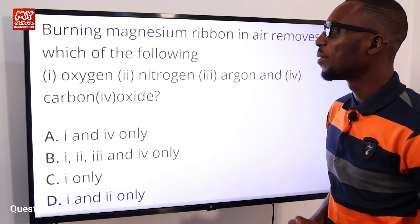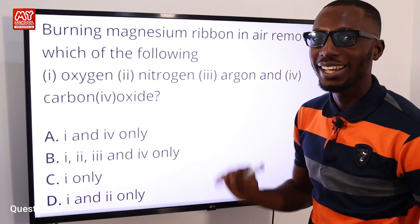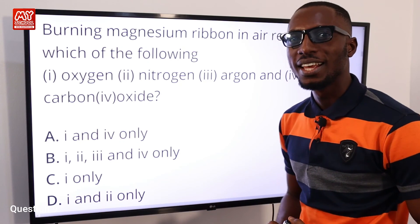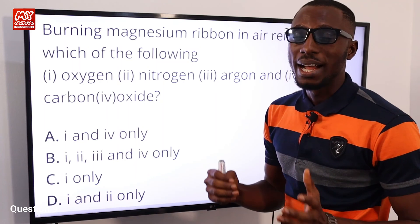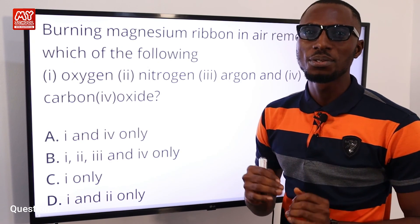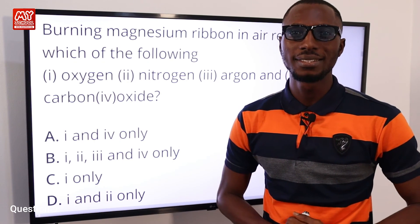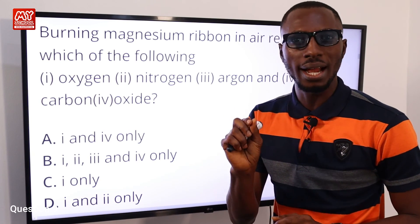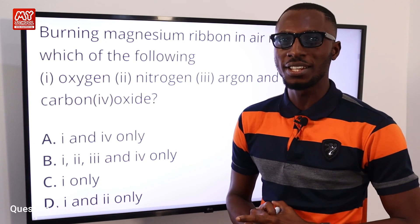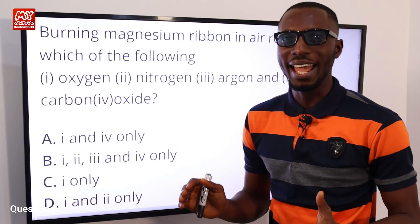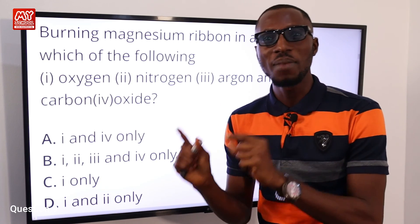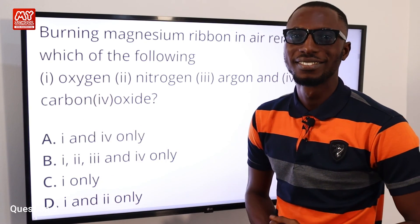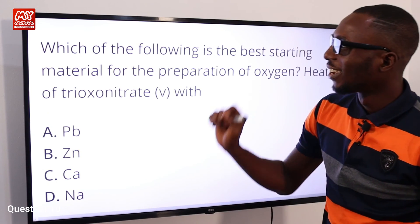Question nine: burning magnesium ribbon in air removes which of the following — oxygen, nitrogen, argon, or carbon dioxide? When magnesium burns in air at high temperature, it reacts with oxygen to produce a bright white light with intense heat (an exothermic reaction). The product is a white powdery ash — magnesium oxide. So burning magnesium in air removes oxygen only, which is option C.